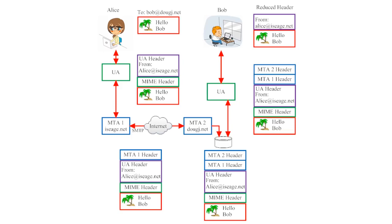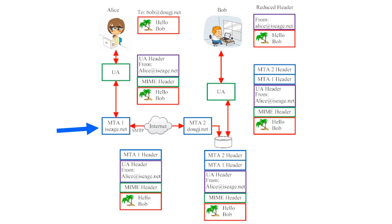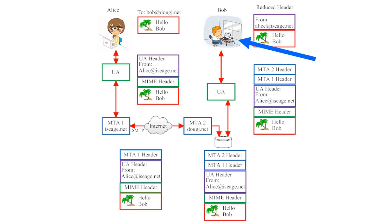Let's examine one more illustration that shows how email systems work. This one shows many of the same things from the first illustration but highlights some different details. In this illustration, we see a user, Alice, sending a message to another user, Bob. Her message is composed of a short text message that says 'Hi, Bob,' and a picture of a palm tree. Alice sends this email using her user agent, which relays the message to a message transfer agent. That MTA sends the email across the internet to a second MTA, which holds the email for Bob until his user agent downloads all of his new incoming emails. Bob can view the email through his user agent.